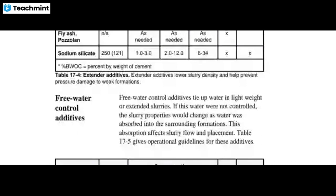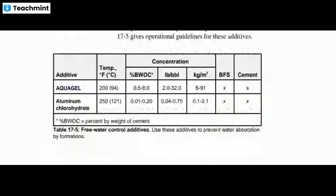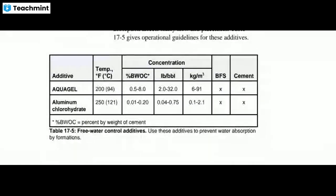Free water control additives tie up water in lightweight or extended slurries. If this water were not controlled, the slurry properties would change as water was absorbed into the surrounding formation, affecting slurry flow and placement. The operation guidelines for these additives are shown in the table. Free water control additives include aluminum chlorohydrate, aqua gel, etc.